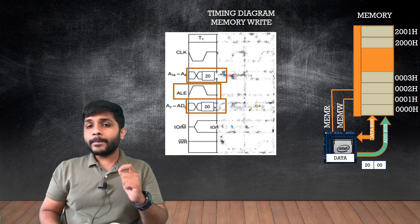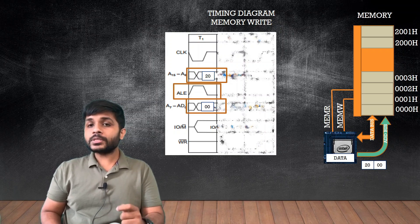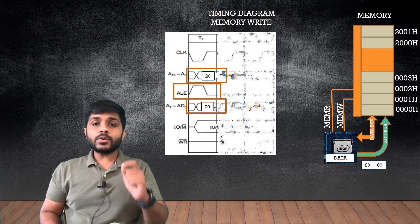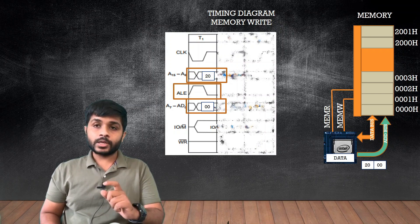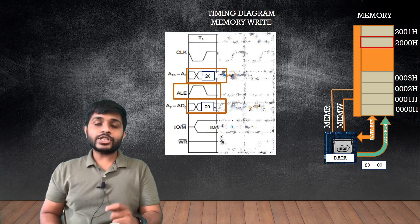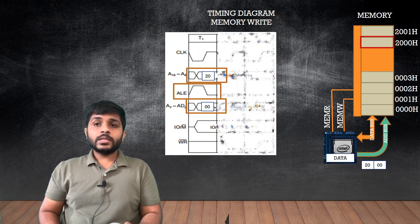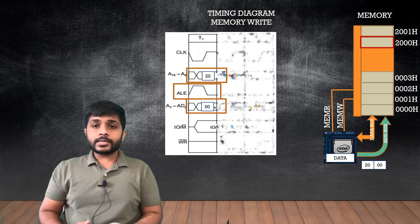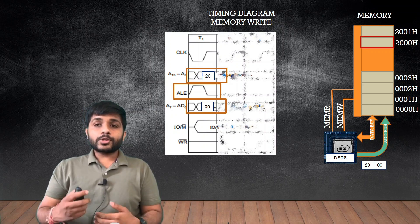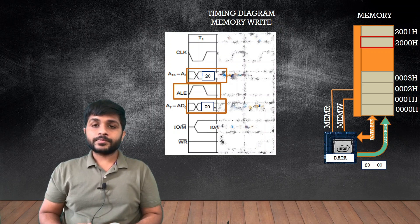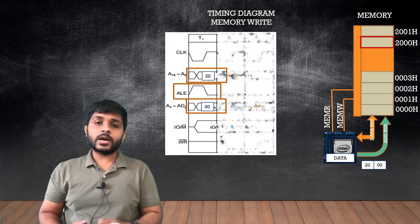When the memory receives the address it understands that the processor wants to select that particular location, so memory selects that address. You can see that address 2000h is selected. Now that the particular address is selected, the processor has to write some data to that selected address.